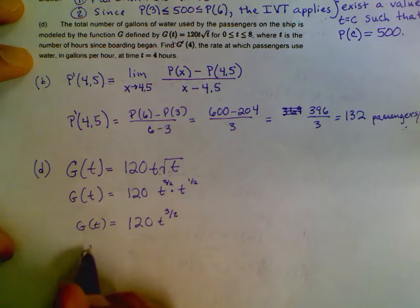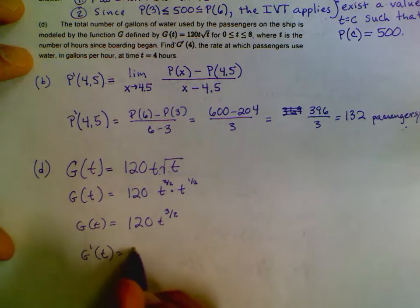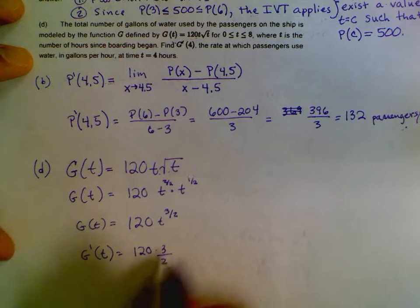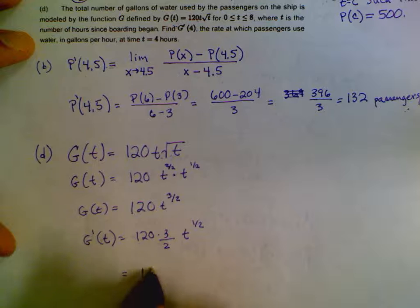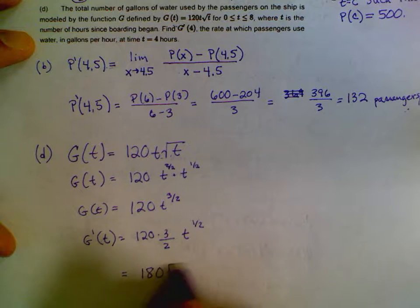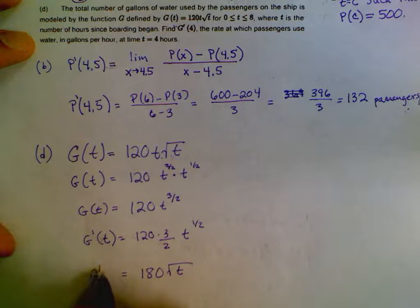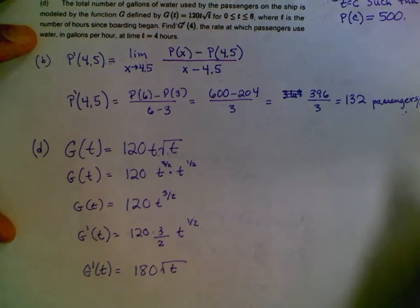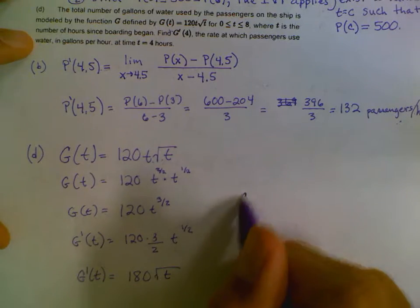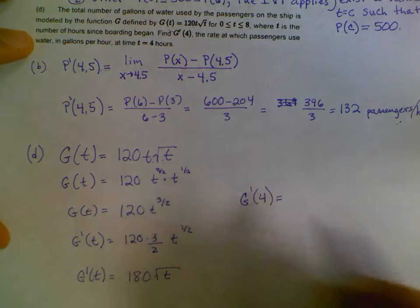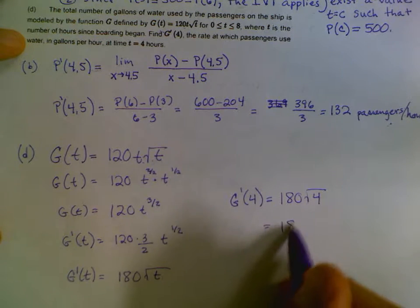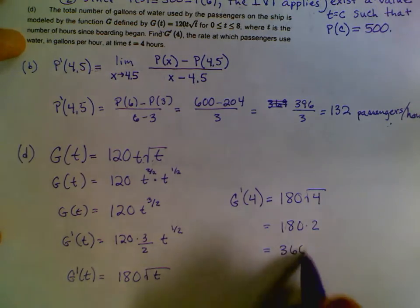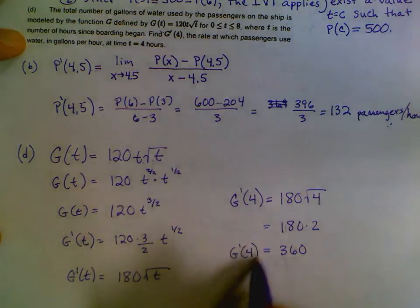All right. So now G prime of T is going to be 120 times three halves times T, and then we're going to subtract one. If we subtract one, we'll get one half. The 120 over two gives me 60. 60 times three is 180. 180 square root T. That is going to be G prime of T. But that's not exactly what they asked us for. They asked us for G prime of four. So G prime of four. Remember, don't write any more Ts once you've written that. So 180 square root four. So basically 180 times two, and 180 times two is 360.